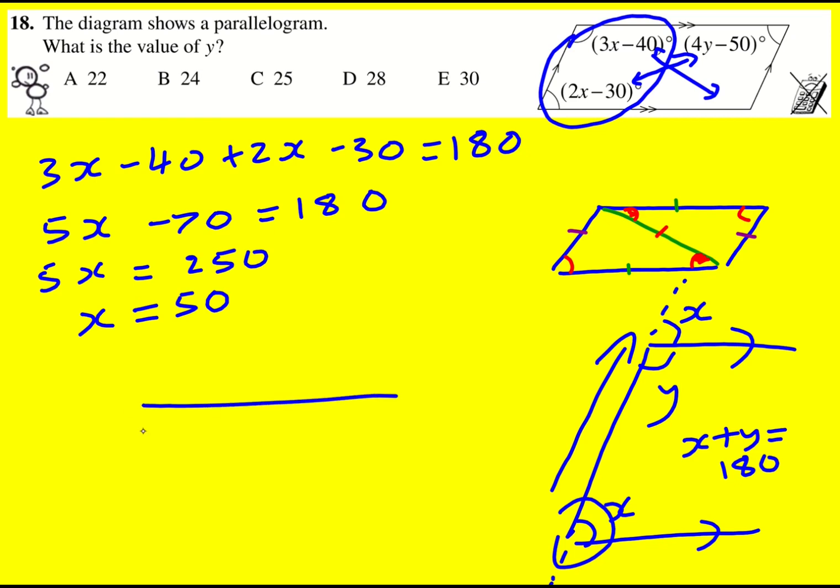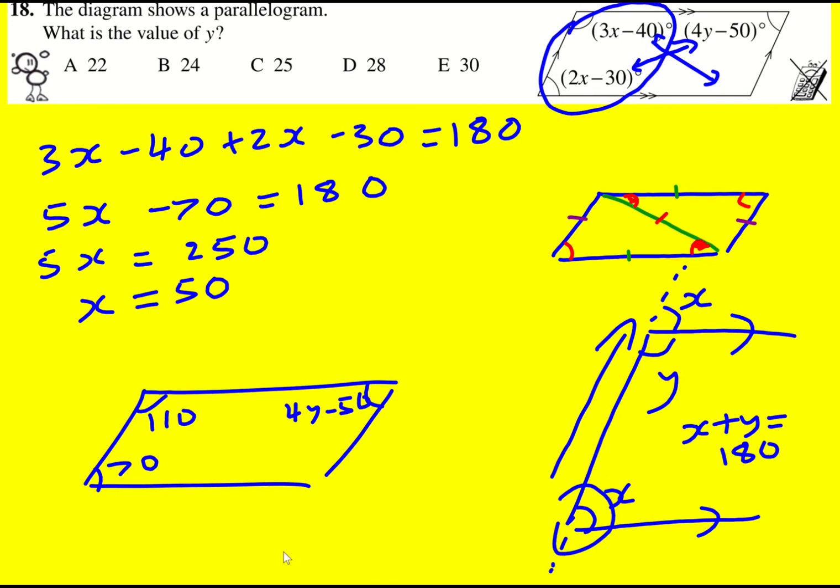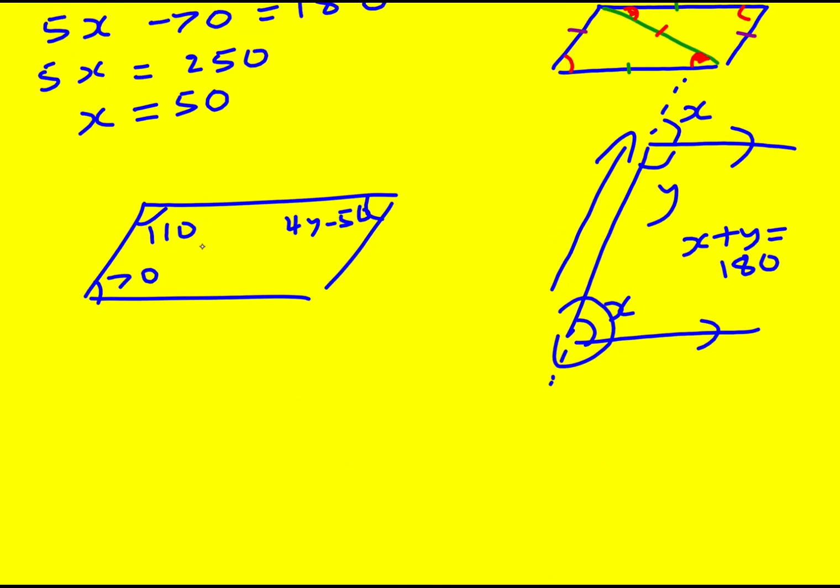Okay, so I'm just going to draw a little sketch of where I am up to. I've got this is 70 and then this is going to be 110. And then I've got 4y minus 50. Now actually, y is what I want to find. But now I can use this first angle fact that I was talking about. I can set these equal to one another.